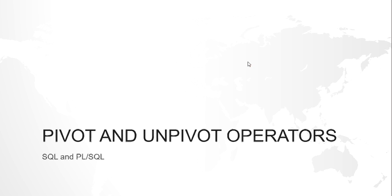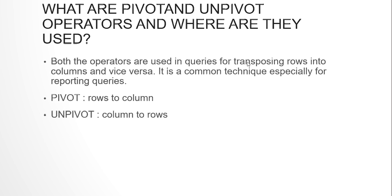Hello guys, this is Kishan and this video is on understanding PIVOT and UNPIVOT operators. So what are PIVOT and UNPIVOT operators and where they are used? Normally in reporting queries you will come across situations where you have to change your rows into columns — your vertical representation of data into a horizontal representation, or a horizontal representation of data to a vertical representation, which is changing columns to rows.